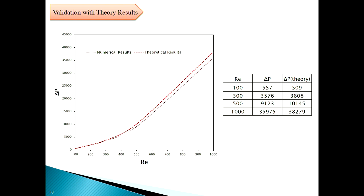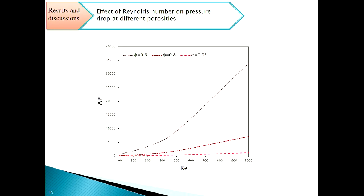The Reynolds number in porous media is defined according to the porosity and pore size, so it is not the same as in internal or external flows — the values are different. Here is the effect of Reynolds number on pressure drop at different porosities. As Reynolds number increases, the pressure drop also increases, and with lower porosity, this increase is very significant.